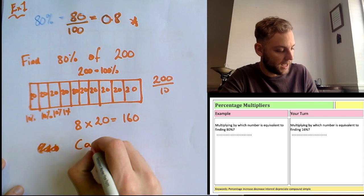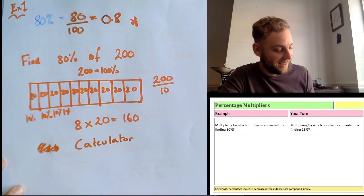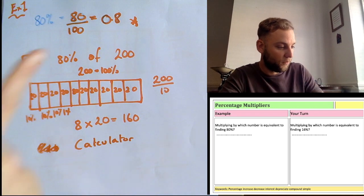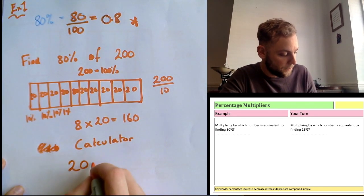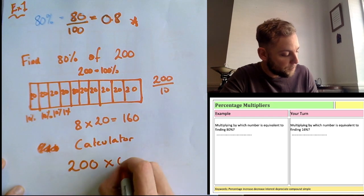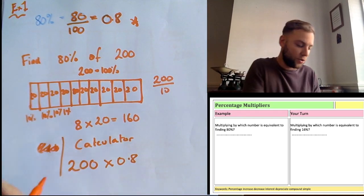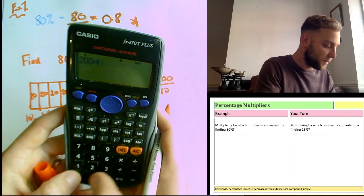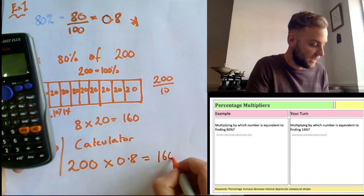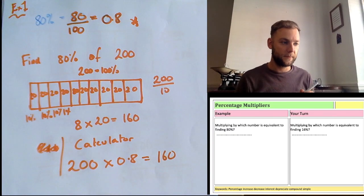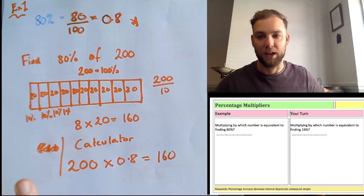That took a bit of time. The much easier way when using a calculator is to use the multiplier, 0.8, and simply do 200 × 0.8, which equals 160. So much easier!